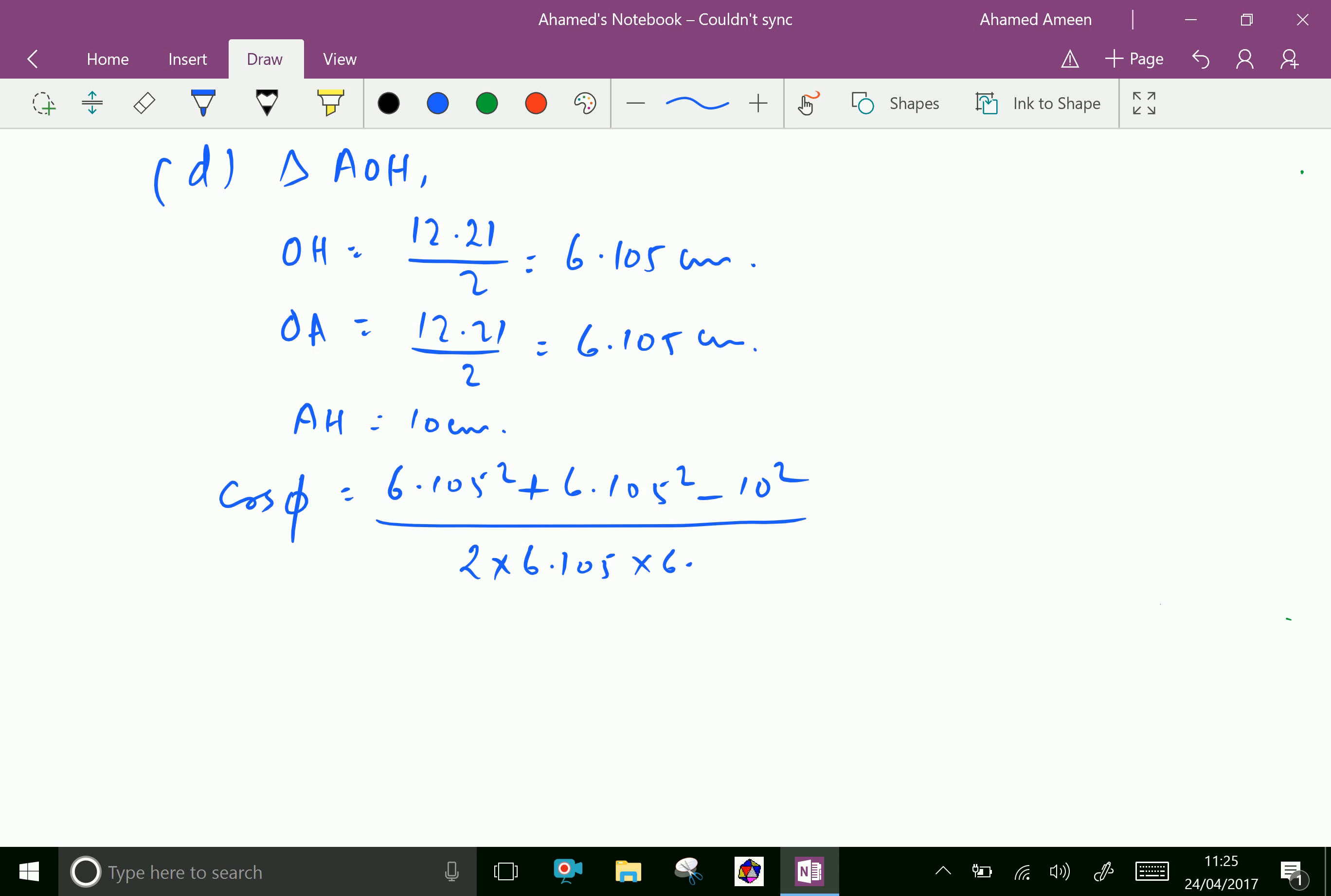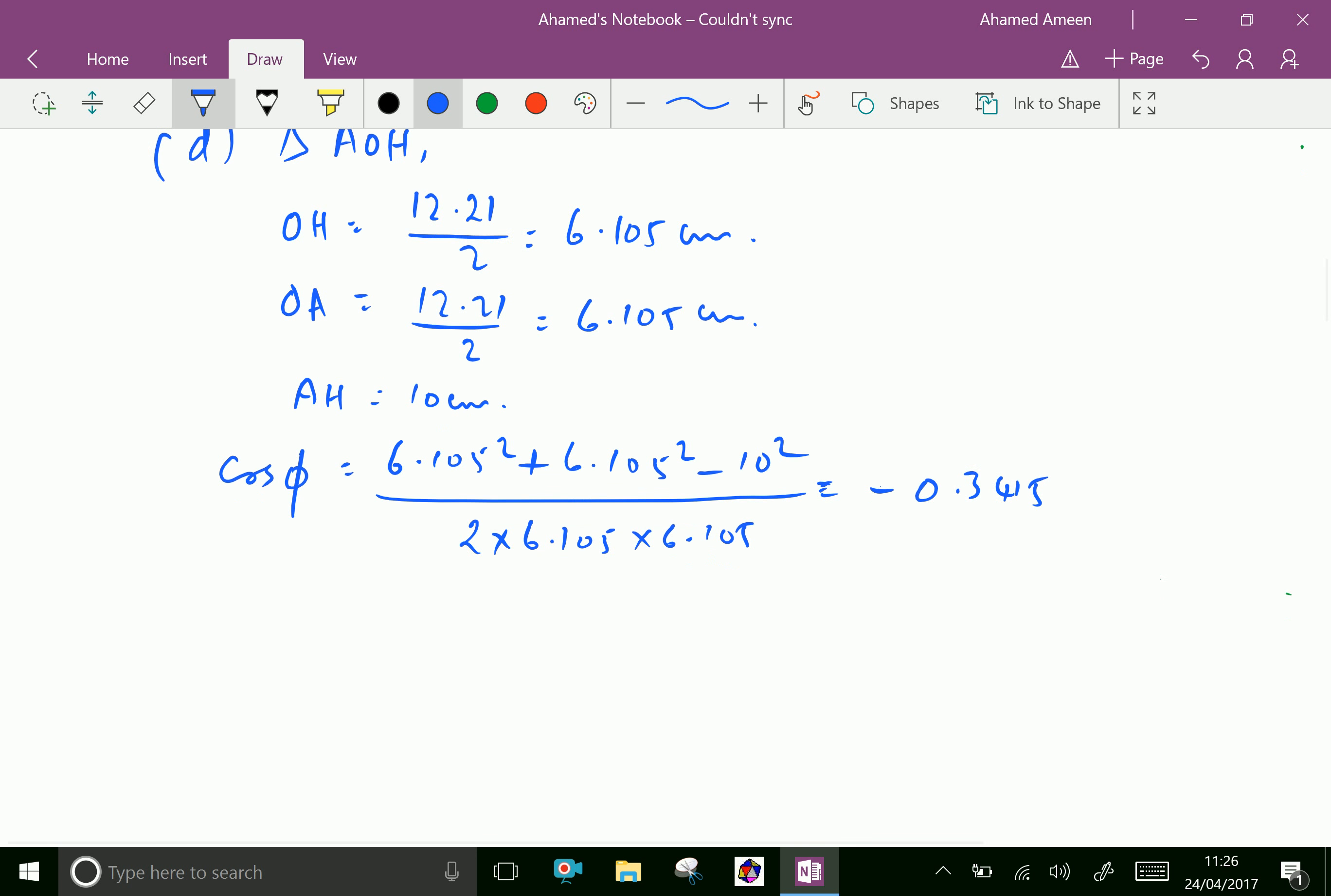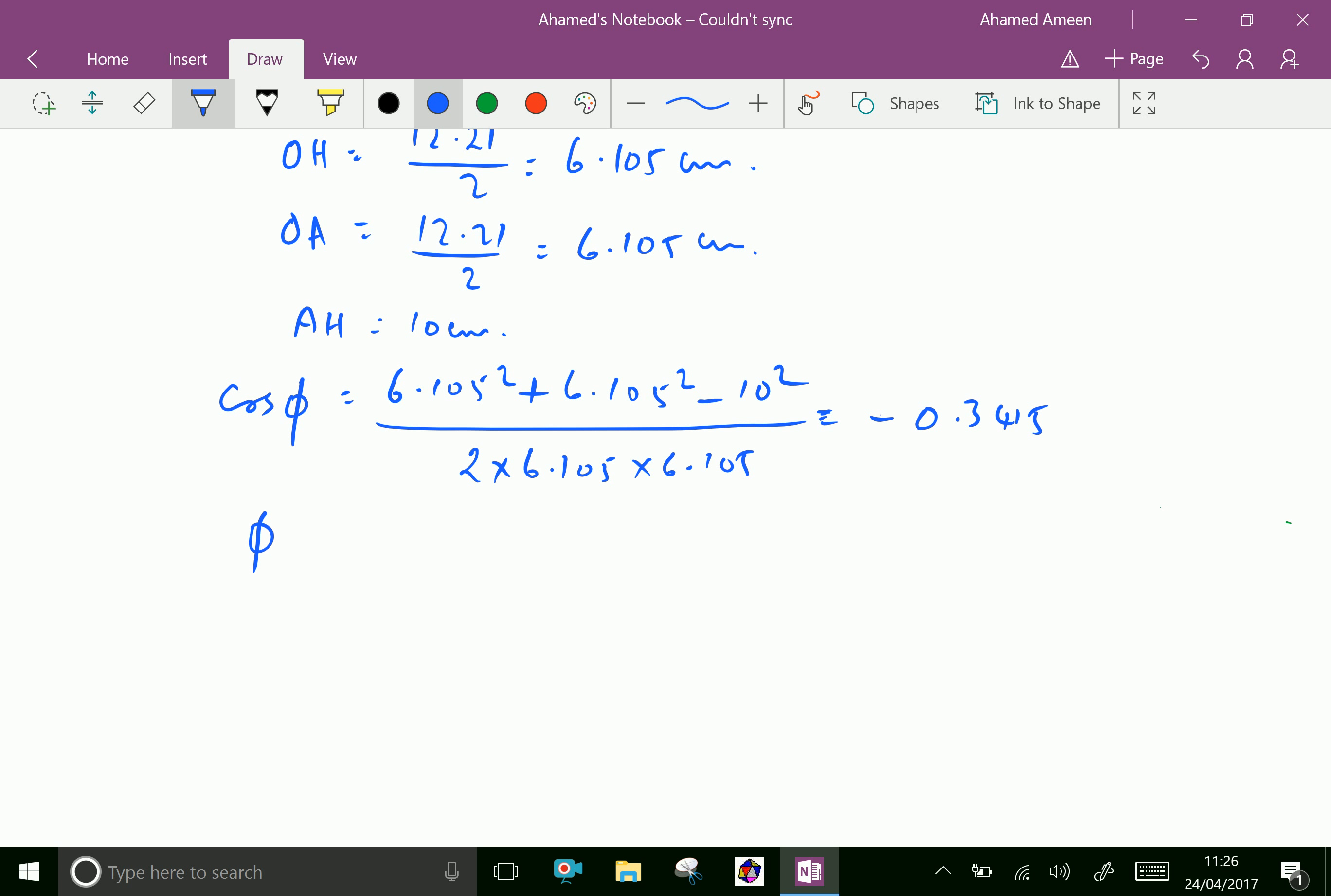This gives minus 0.3415. Therefore phi equals cos inverse of minus 0.3415, which equals 110 degrees.